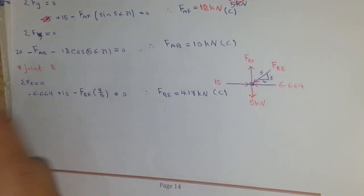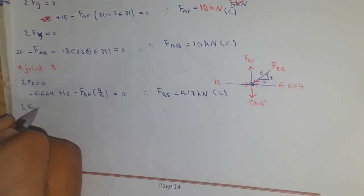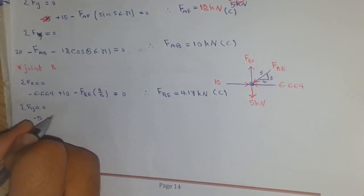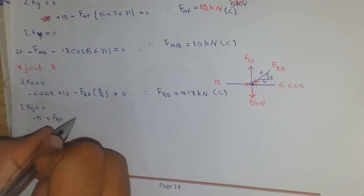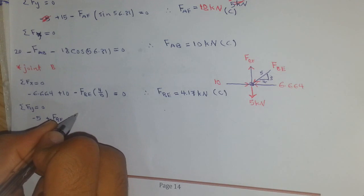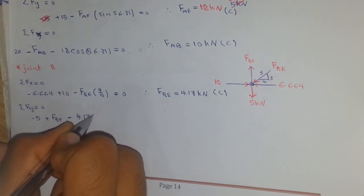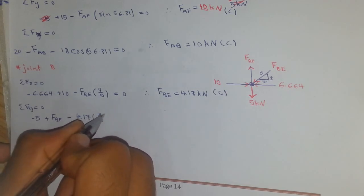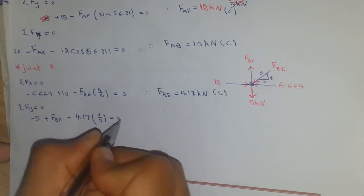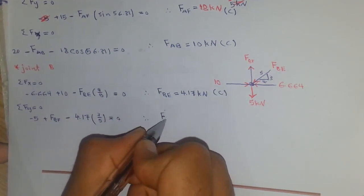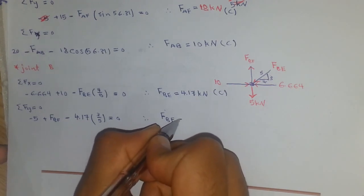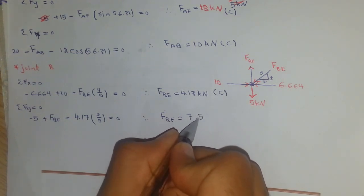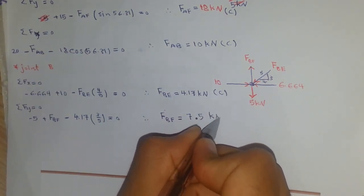Continuing at joint B, summation of Fy equals zero: minus 5 plus F_BF minus F_BE multiplied by its vertical component of 3 over 5 equals zero. That is, minus 5 plus F_BF minus 4.17 multiplied by 3 over 5 equals zero. We get F_BF equals exactly 7.5 kilonewtons, and that is tension.